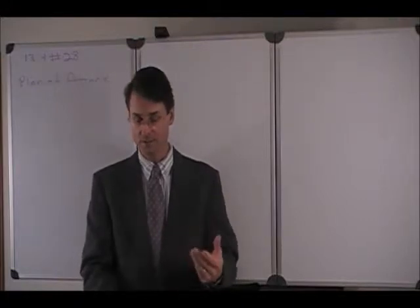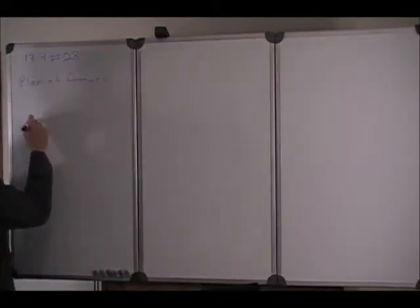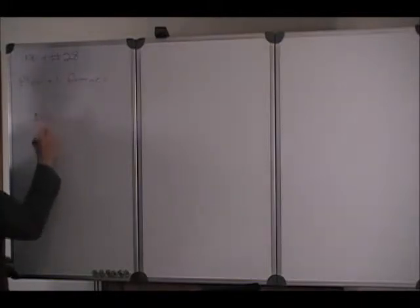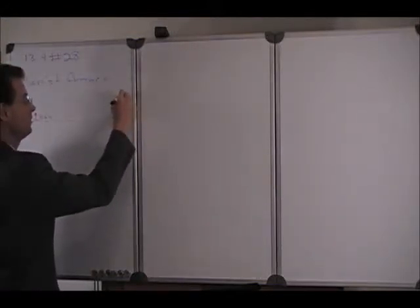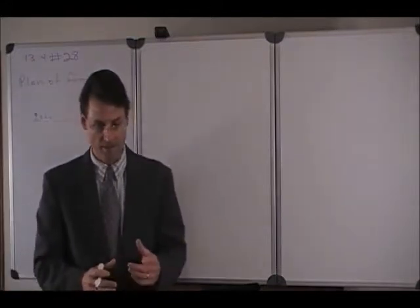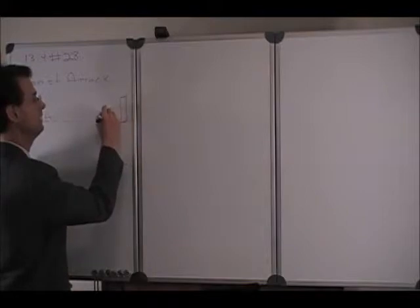So the problem asks, a batter hits a baseball three feet above the ground toward the center field fence. So let's draw our picture. The baseball starts off at a height of three feet and it's hit toward the center field fence, which is some distance away. And the fence is 10 feet high. So we put that in here.